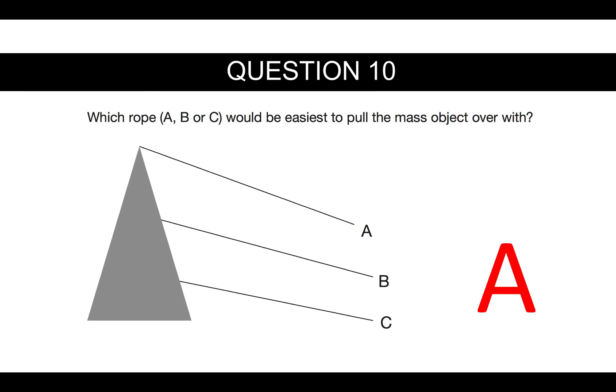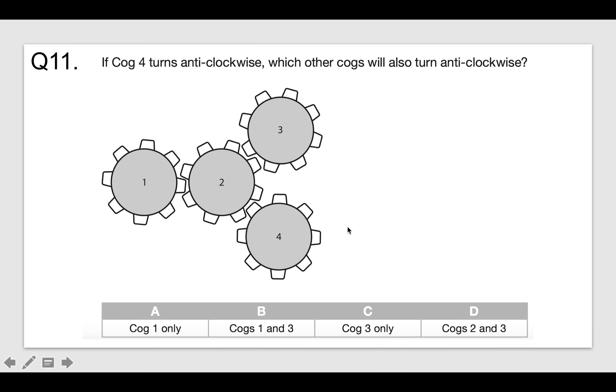With this kind of question, it very much depends on the distance as well. How far you've got from where the rope is and the distance across. So if A was down here, say close, that wouldn't be easy. But because they're equidistant across, the one that's highest up is easier to pull the load over with.